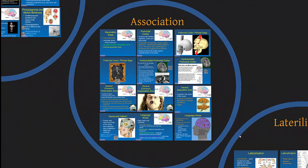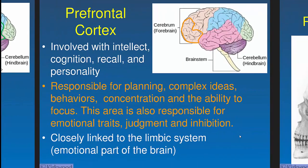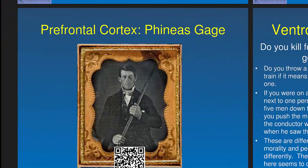Now for association areas, which are spread all over: prefrontal cortex, language areas, general interpretation area, and visceral association areas. The prefrontal cortex — at the front of the frontal lobe — handles complex ideas, behaviors, concentration, focus, personality, emotional traits, and judgment.